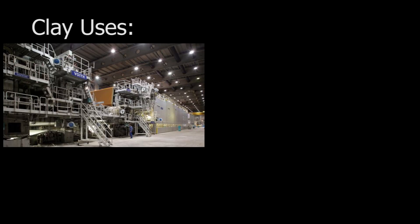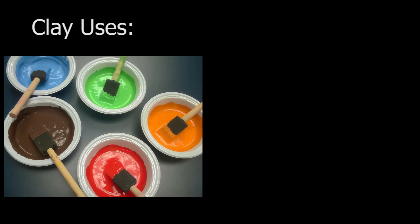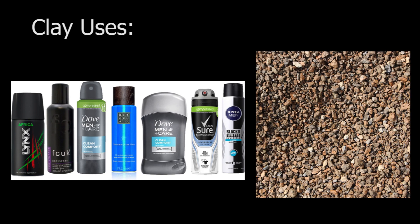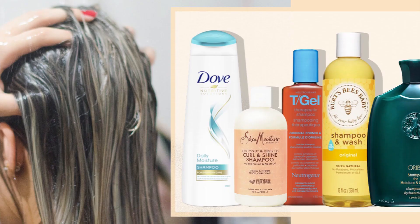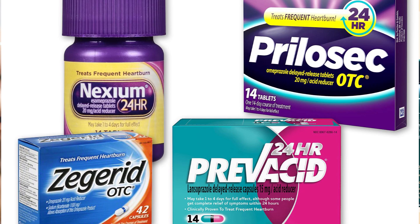Clay is used in the manufacture of paper. It improves printability and water resistance and keeps ink from bleeding. Clay is also used in tires, plastics, paint, pencils, makeup, antiperspirants, as drilling fluids to produce oil and gas, as lightweight aggregate after firing, as shampoo, toothpaste thickener, or for filtering vegetable oils and in antacid medications.